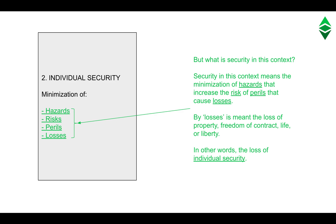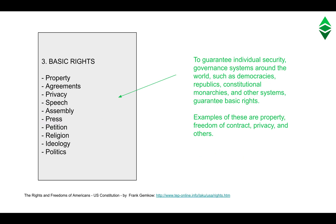But what is security in this context? Security in this context means the minimization of hazards that increase the risk of perils that cause losses. By losses is meant the loss of property, freedom of contract, life, or liberty — in other words, the loss of individual security.